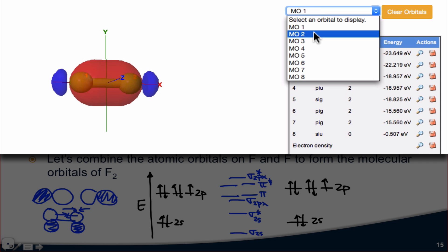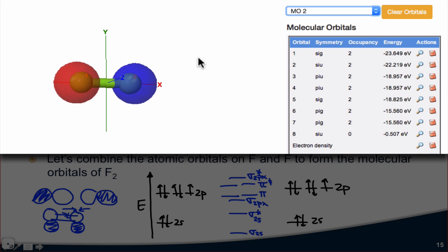MO2, well, that's the sigma star orbital based on overlap of the 2s. So it's 2s1 minus 2s2, if you'd like. And notice that we have a node between the nuclei, a sign change, positive density on one side, negative density or negative wave function on the other side.